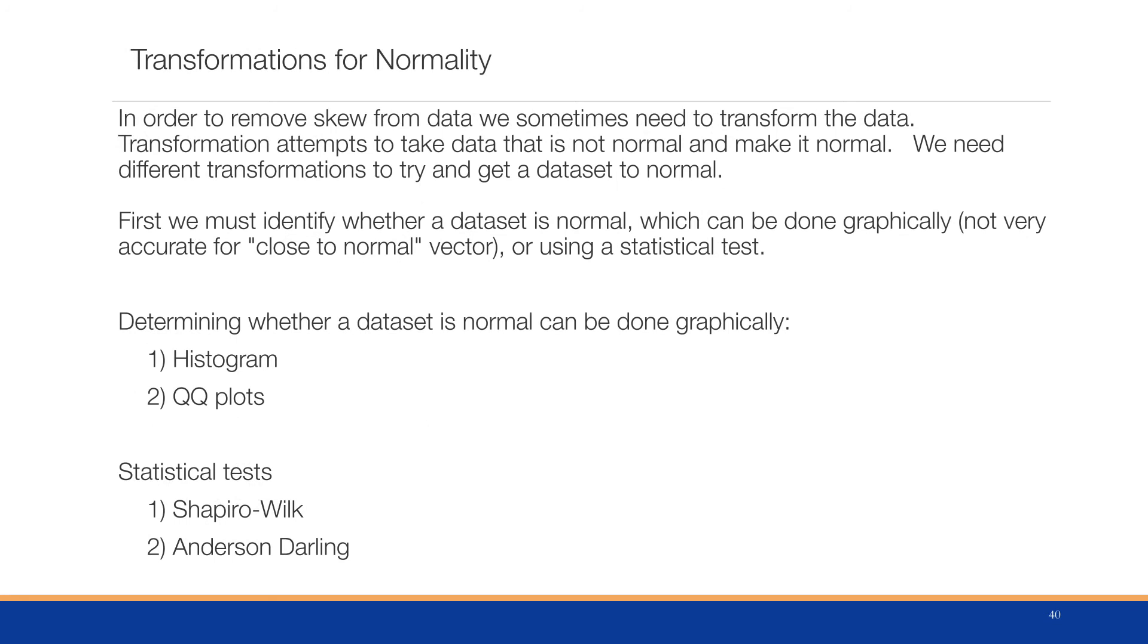Now, if we have a dataset that's highly skewed or with some problems, we may need to transform the data. Why are we transforming it? Because we want to transform data and try and make it normal. And we have a lot of different statistical methods that have an assumption of normality. And they're very robust when we actually have normality, such as ANOVA or t-tests and so forth. We must identify whether a dataset is normal, which can be done graphically, but it's not very accurate for close to normal vectors, or using a statistical test. You should note there are a number of other tests that could be used for testing of normality.